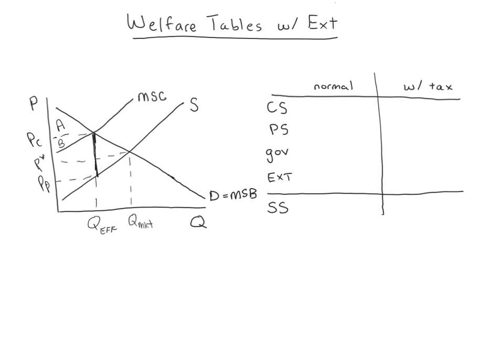Now I can label each of these little areas: A, B, C, D, E, F, G, and H. So now we're going to find the consumer surplus, producer surplus. For the government in this normal case without a tax, we can fill that in now — not applicable, there's no taxes or subsidies. And then the new thing will be filling in the externality row. Before when we didn't have externalities, we left this row out of our tables. But now third parties are being affected — either being hurt or benefiting — and we need to include those costs and benefits. If we leave them out, it wouldn't really be right to talk about social surplus since we're leaving out part of society.